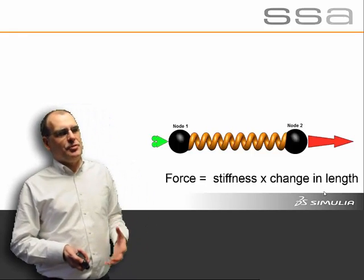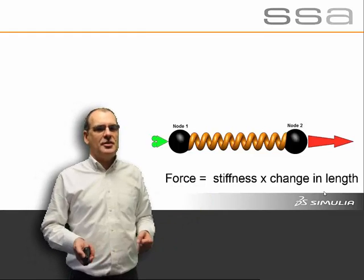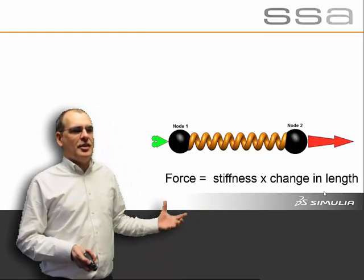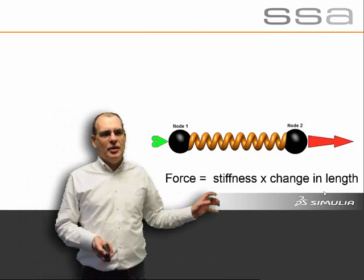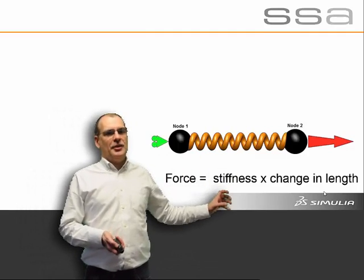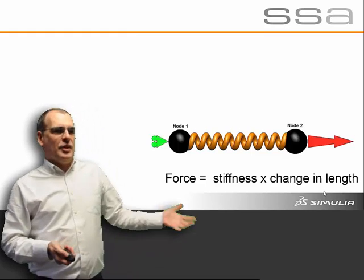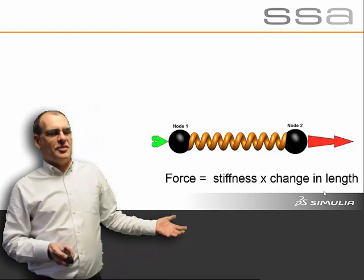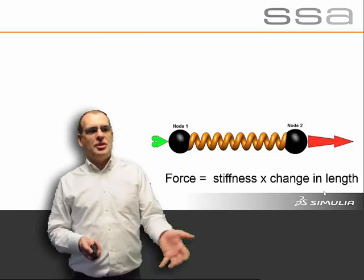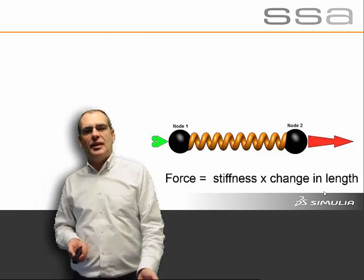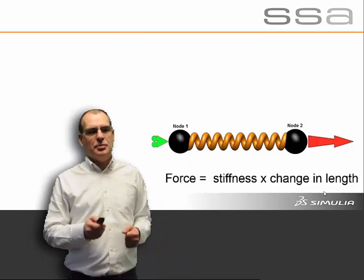If we take the simplest finite element it is possible to create — and it's possible to create these in systems like Abaqus — we can take a single spring element. That single spring element has two calculation points at the ends of the spring. We can extend it, fix it at a calculation point, and apply a force. Force equals stiffness times change in length can then be used to determine how that system is going to behave.